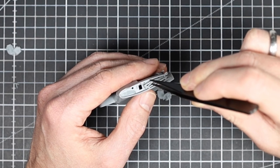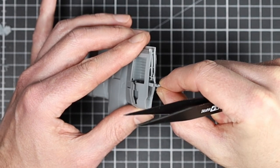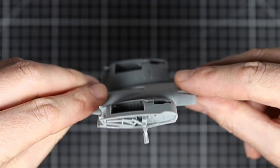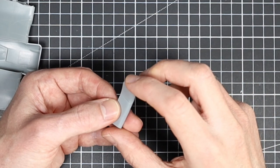The kit offers the option to display the wings folded, which is what I wanted to do. I left the details of the folding mechanism unchanged. Here you could attach additional cables to increase the level of detail.